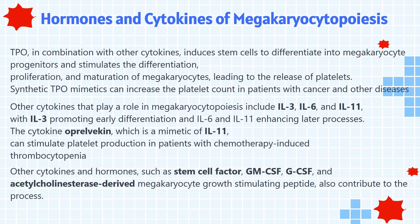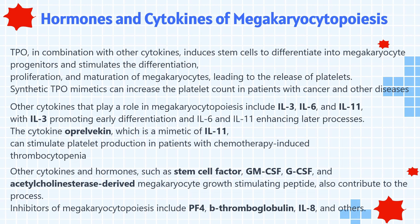Other cytokines and hormones, such as stem cell factor, granulocyte macrophage colony-stimulating factor, granulocyte colony-stimulating factor, and acetylcholinesterase-derived megakaryocyte growth-stimulating peptide, also contribute to the process. Inhibitors of megakaryocytopoiesis include PF4, beta-thromboglobulin, interleukin-8, and others. The reduction of certain transcription factors, such as FOG-1, GATA-1, and NFE-2, can decrease megakaryocytopoiesis at various stages.